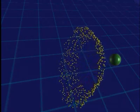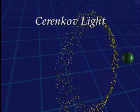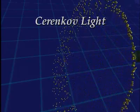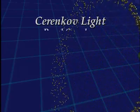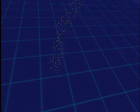Light produced in this way is called Cherenkov light, in honor of the Russian physicist Pavel Cherenkov, who first explained it.